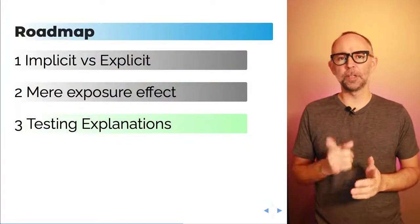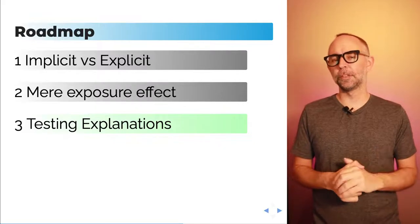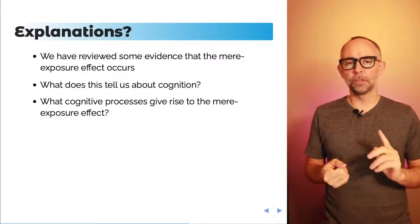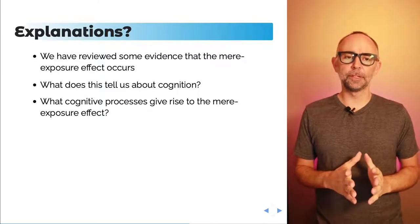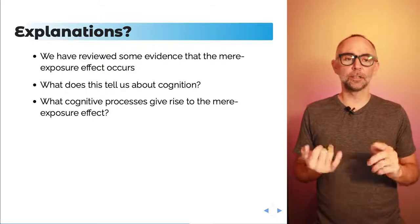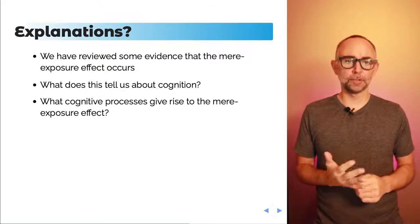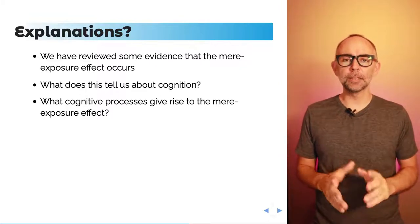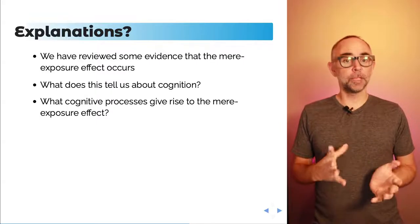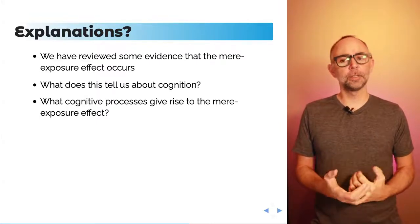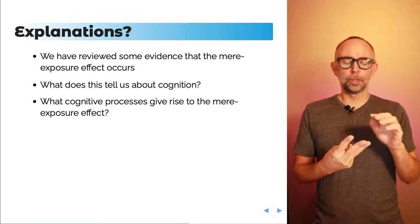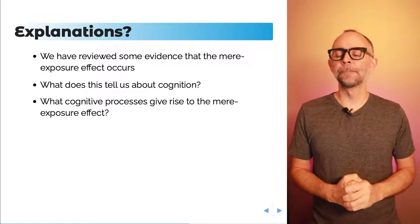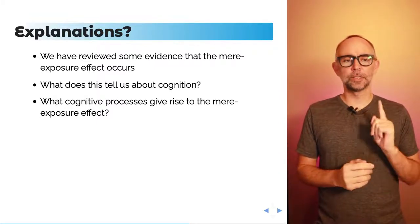Welcome back to part two. We've been talking about the mere exposure effect and now we're going to talk about how researchers have tested various explanations of this effect. We're going to consider what this evidence tells us about cognition and what kinds of cognitive processes might give rise to the mere exposure effect. We'll look at accounts that propose two kinds of systems, and at the end, we'll consider a single system account.